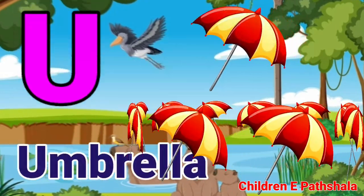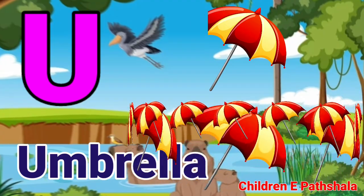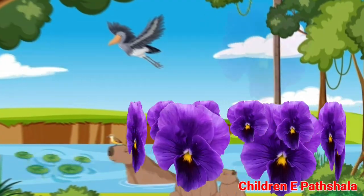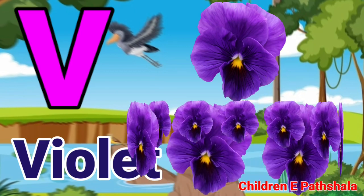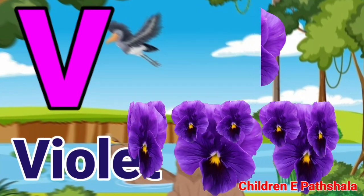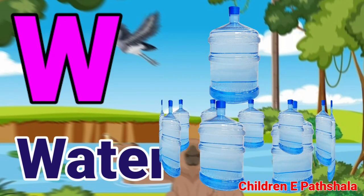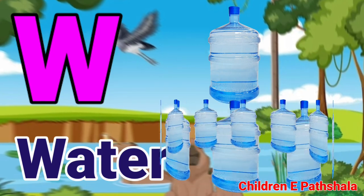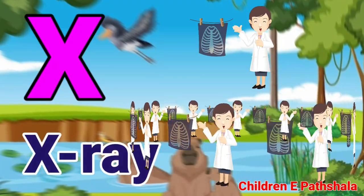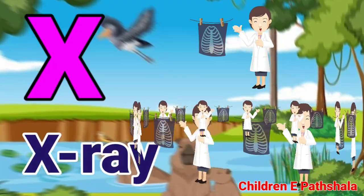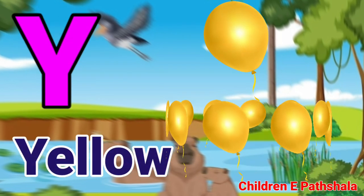U for Umbrella. V for Violet. W for Water. X for X-Ray. Y for Yellow.